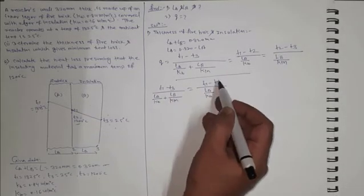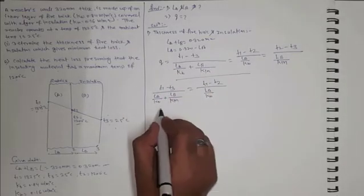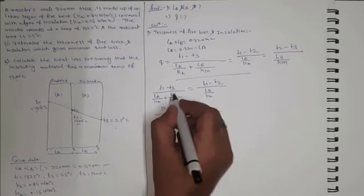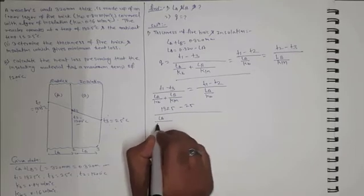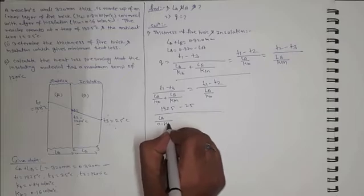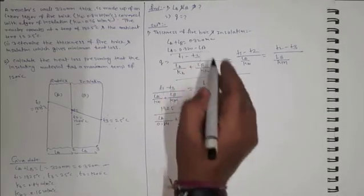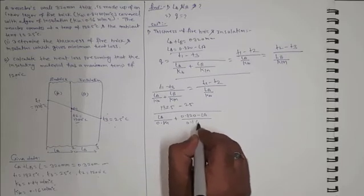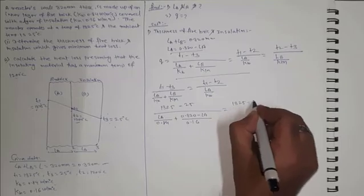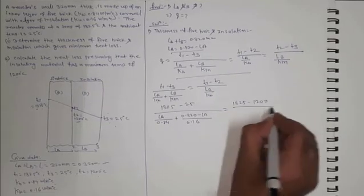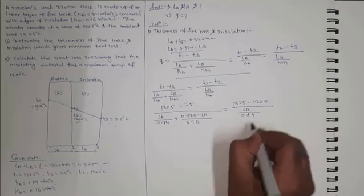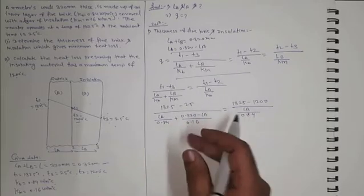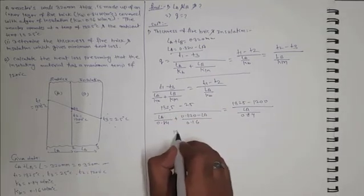Substituting values — T1 = 1325, T3 = 25, T2 = 1200 — into the equation: (1325 − 25) / (LA/0.84 + LB/0.16) = (1325 − 1200) / (LA/0.84). This gives 1300 in the numerator on the left side. Simplifying, 1/0.84 gives 1.1904, so the left denominator becomes 1.1904·LA + (0.320/0.16) − LA/0.16, which is 1.1904·LA + 2 − 6.25·LA.